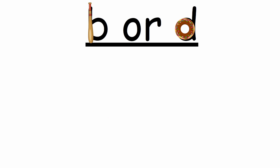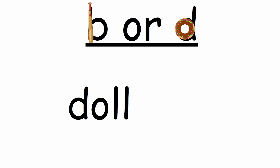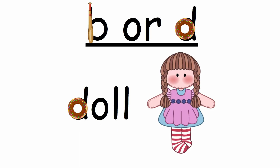Let's see our next word. Remember, your job is to figure out if it starts with a b or if the word starts with a d. What does this word start with? It starts with a donut. So what does that mean? It's a letter d. And what sound does d make? It makes the sound d. Very good. So let's go ahead and blend this word: d, ah, oh — doll. Doll. What's the word? Doll. Very good.